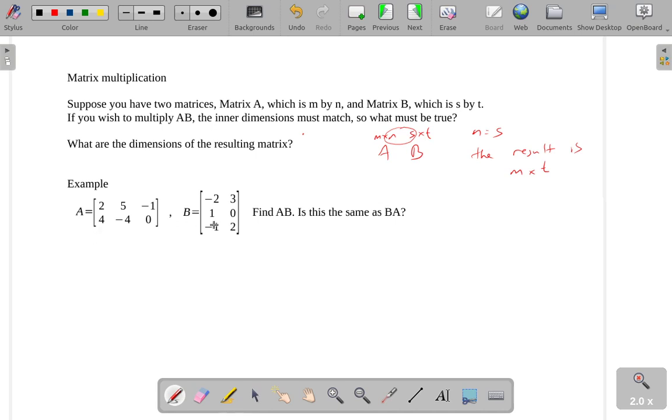If we're doing A times B, this is a 2 by 3 matrix, and this is a 3 by 2 matrix. If we were to multiply these together,